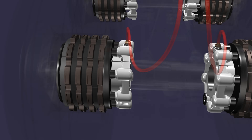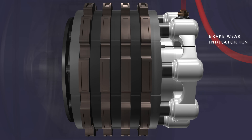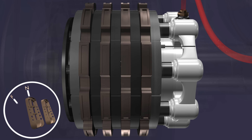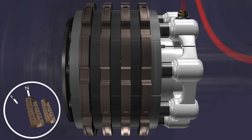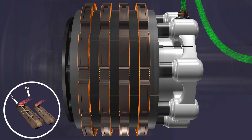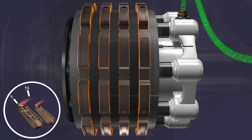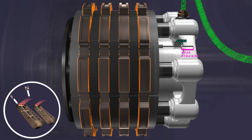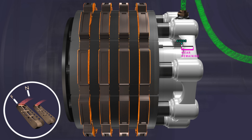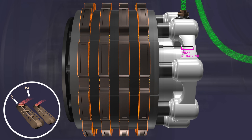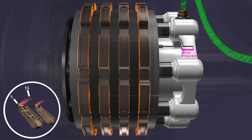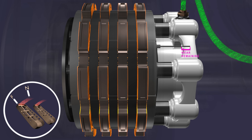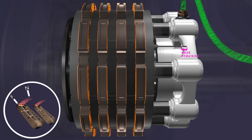Each brake assembly is equipped with wear indicator pins. The indicator pin is attached to the pressure plate. To calculate the remaining brake wear, full pedal force must be applied, causing the brake pistons to move the pressure plate and compress the stack of rotors and stators against the end plate. The wear indicator pin distance is measured from the guide to determine the remaining brake wear. Over time, as the brake wears down due to friction between the discs, the brake pressure extends the pistons further and the indicator pin continues to move inwards.